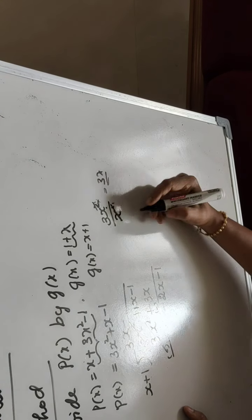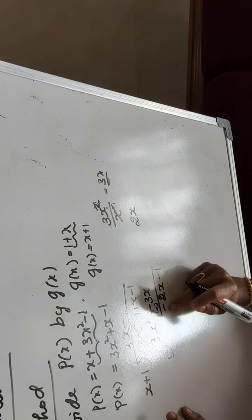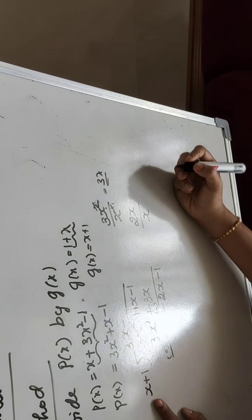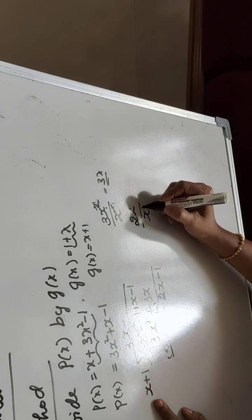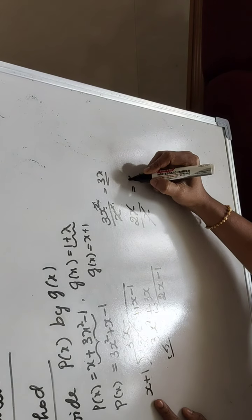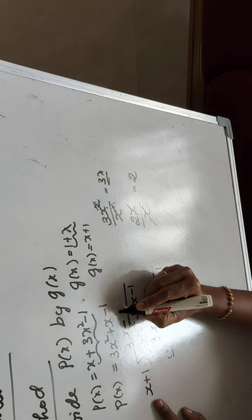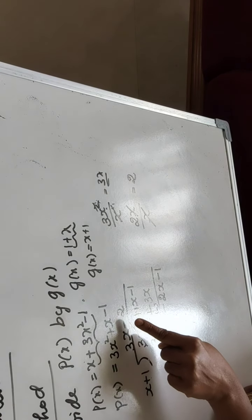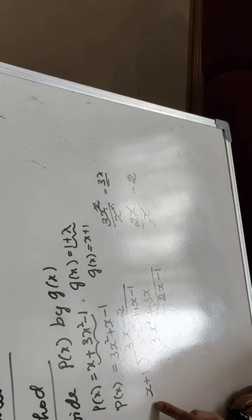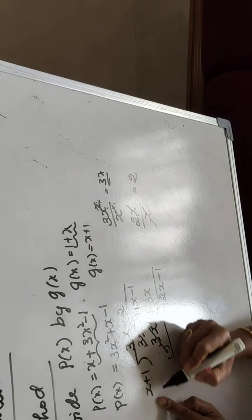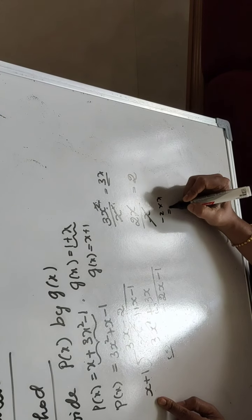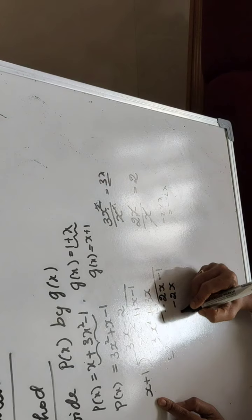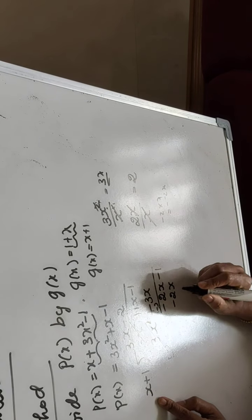Now repeat the step. Take the first term of the new line: minus 2x divided by x gives minus 2. Write minus 2 in the quotient. Multiply minus 2 into both terms of the divisor: minus 2 times x gives minus 2x, and minus 2 times 1 gives minus 2. Our intention is to match the first term, including its sign.